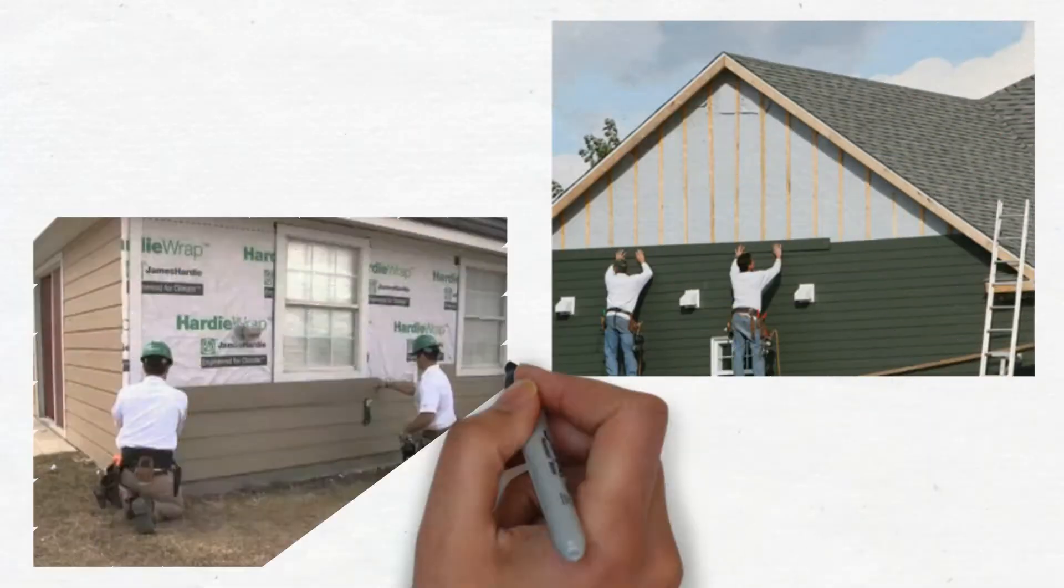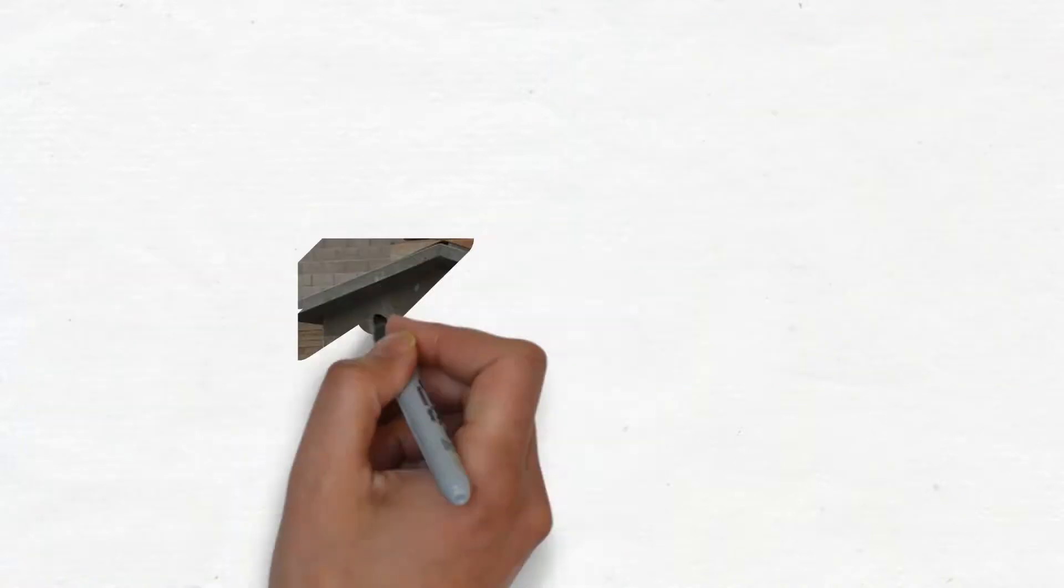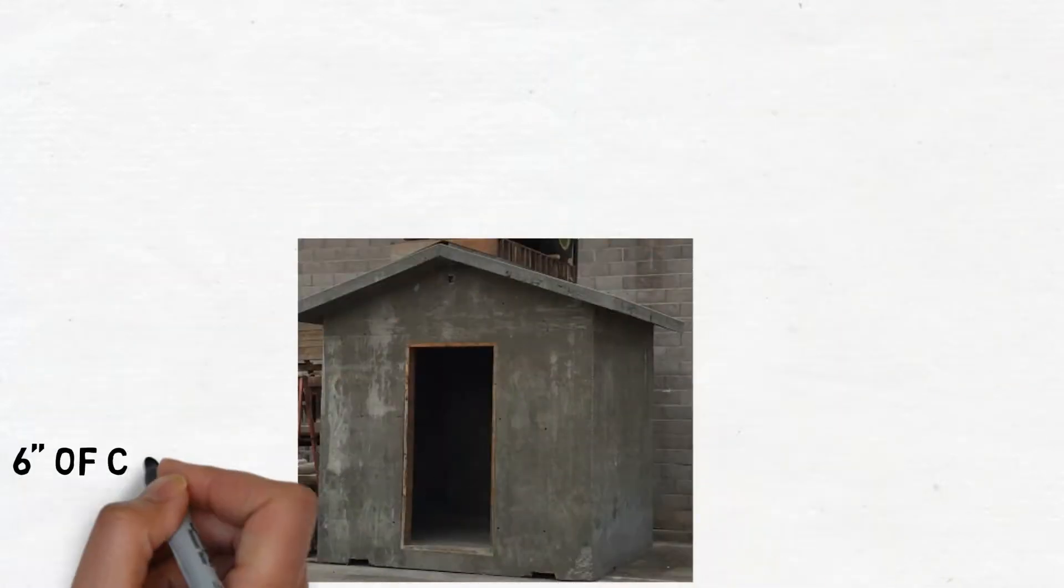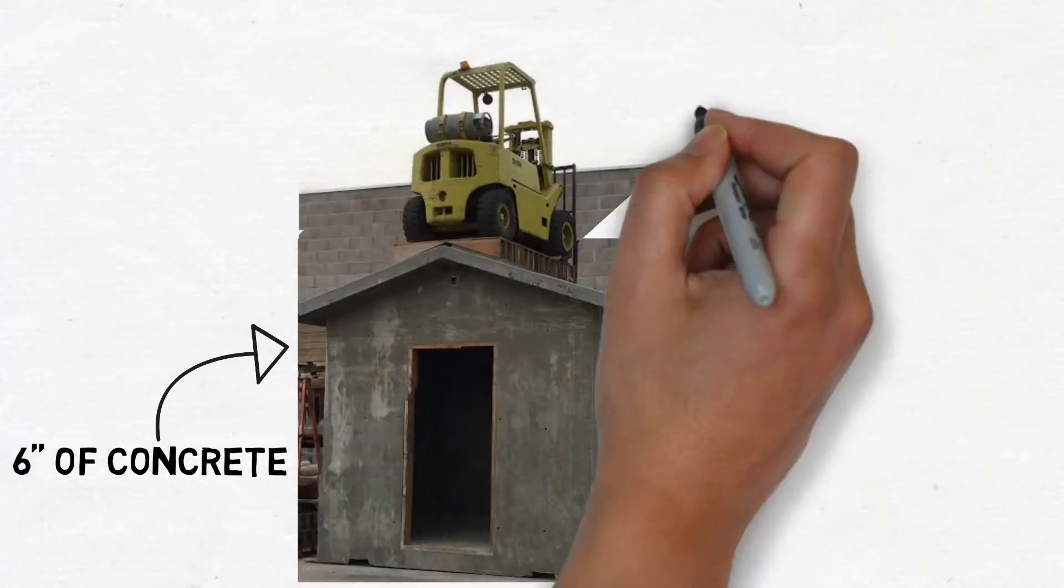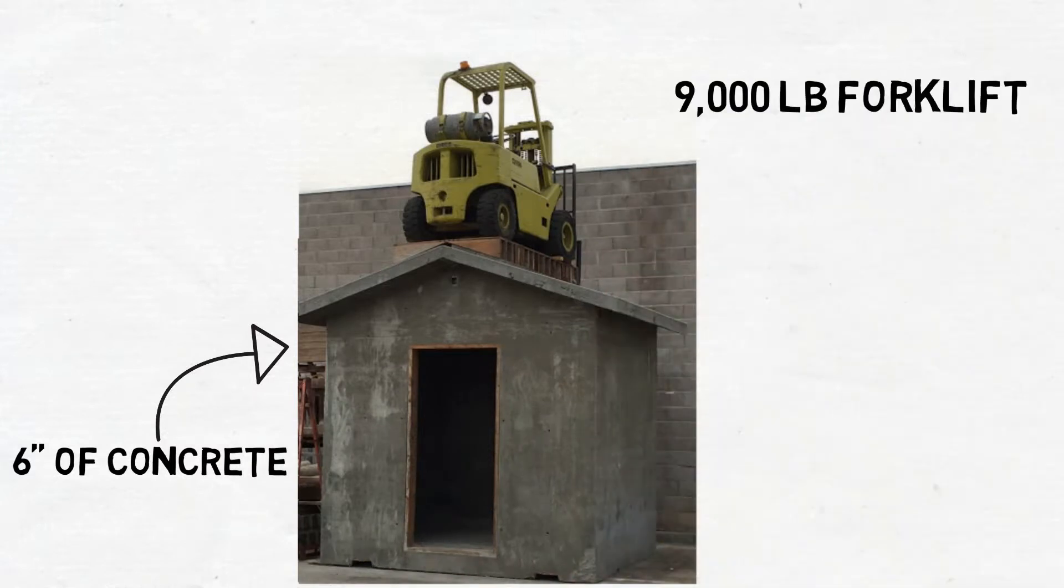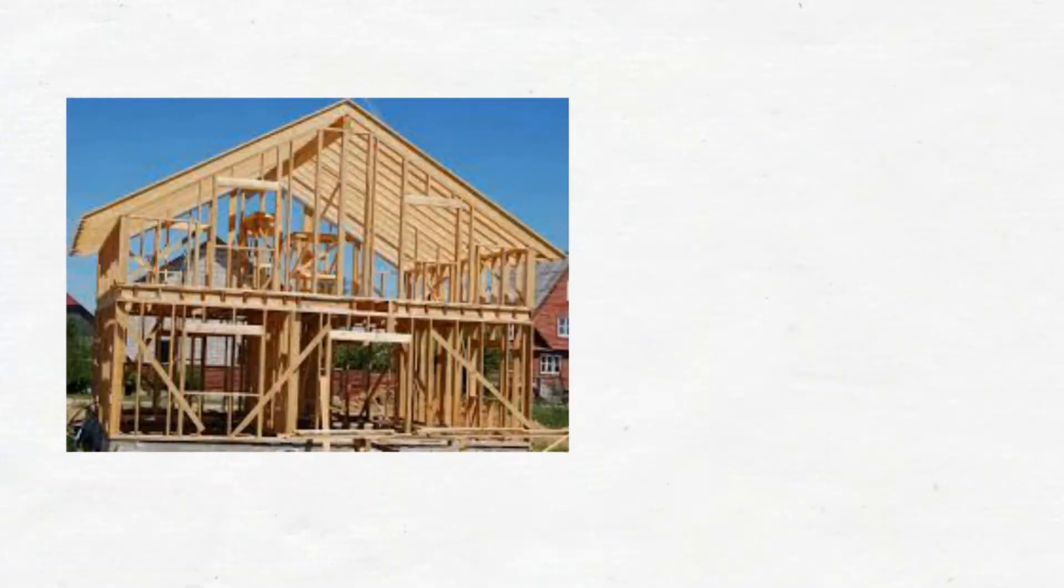Imagine that you took the stucco or siding off of a conventional home and replaced it with a 6-inch thick layer of concrete. The reinforced concrete dramatically improves the structure of the house, so you no longer need wood walls and beams.